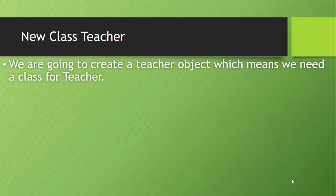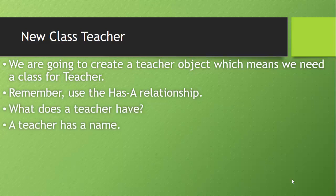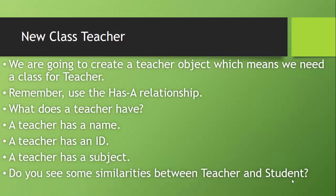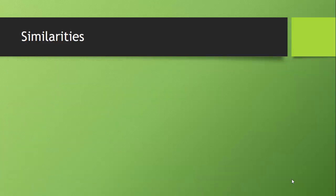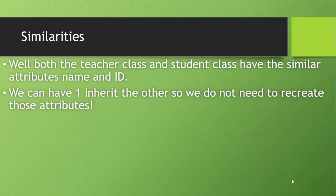Let's go ahead and create a teacher object, which means we need a class for a teacher. We use the has-a relationship. So what does the teacher have? Teacher has a name, teacher has an ID, teacher has a subject. Do you see some similarities between teacher and student? Both teacher class and student class have similar attributes — name and ID. You might say we can have one inherit the other so we don't need to recreate those attributes. No, we cannot. And that is a common mistake that is made.